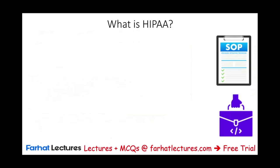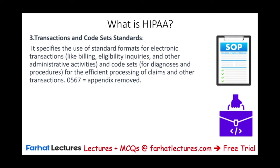HIPAA also sets standards for transactions. For example, it specifies standard formats for electronic transactions like billing. A code such as XB75 might mean billing for a person who stayed overnight in the hospital — a bed expense. It also covers eligibility inquiries and other administrative activities, as well as code sets for diagnosis and procedures for efficient processing of claims — for instance, a code like 0567 might represent an appendectomy.